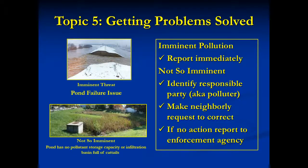Topic 5. You'll encounter two types of problems: those rare ones which pose an imminent threat to public safety, and all others. The upper photo shows a dam that just washed out, posing a major threat to downstream residents. If you had visited this pond before and saw low spots, you could have prevented the washout by reporting it immediately. But most problems will be like that on the bottom — a full pond that no longer traps pollutants, but isn't an imminent threat.